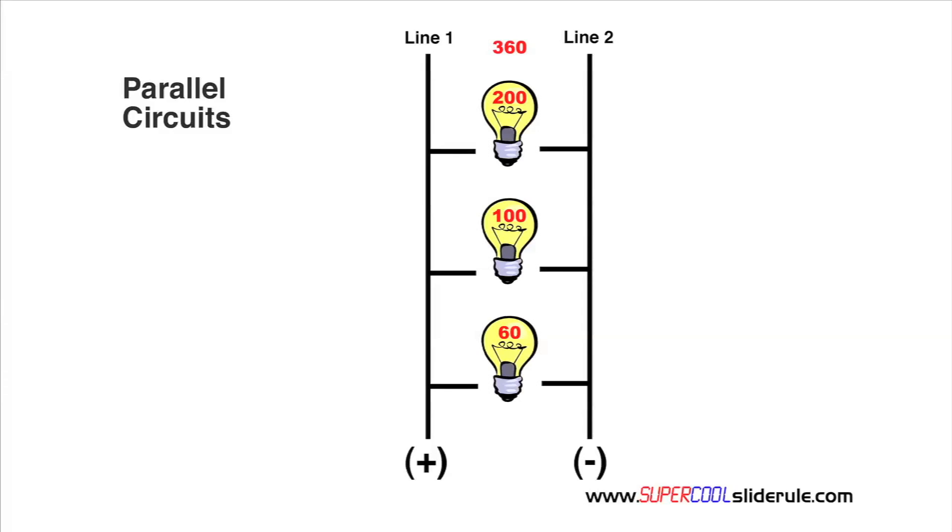The total electricity traveling through the wire at this location is 360 watts. However, at each location here, here, and here, the electricity flow is only 60 watts, 100 watts, and 200 watts, respectively.